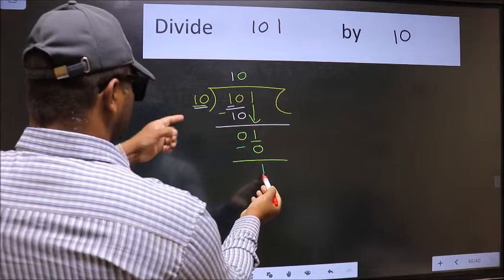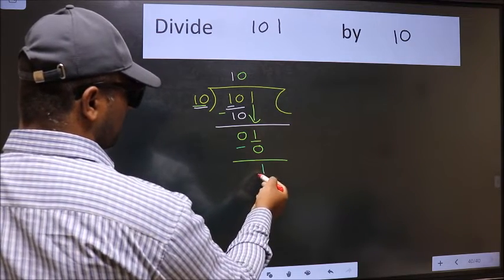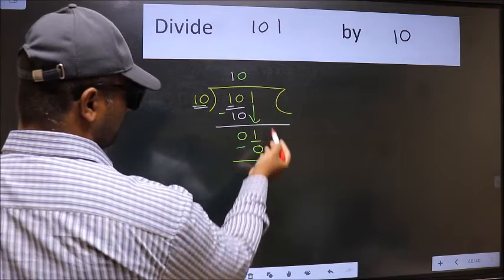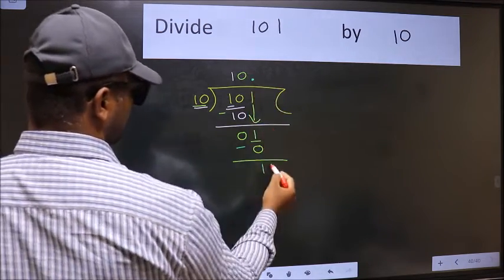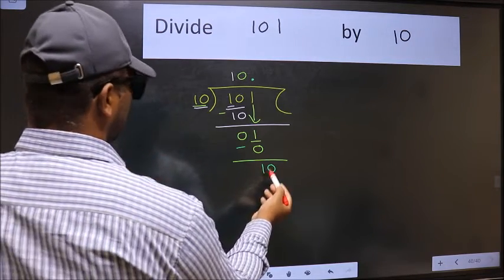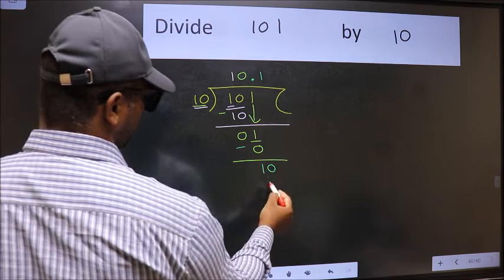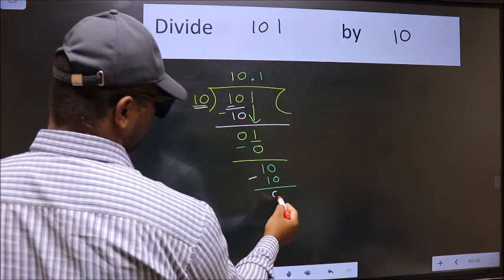1 is smaller than 10, and we did not bring any number down. So now we can put dot and take 0. So 10. When do we get 10 in 10 table? 10 once, 10. Now we should subtract. We get 0.